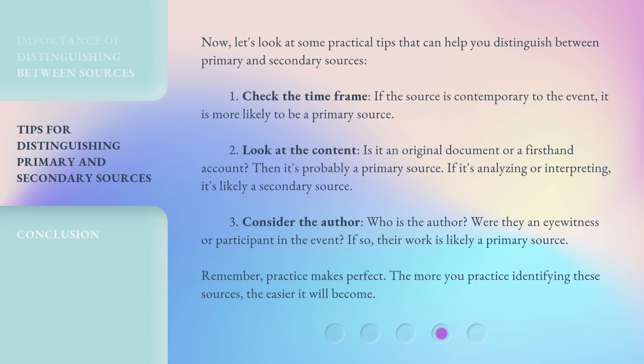Now, let's look at some practical tips that can help you distinguish between primary and secondary sources. 1. Check the time frame. If the source is contemporary to the event, it is more likely to be a primary source. 2. Look at the content. Is it an original document or a first-hand account? Then it's probably a primary source. If it's analyzing or interpreting, it's likely a secondary source. 3. Consider the author. Who is the author? Were they an eyewitness or participant in the event? If so, their work is likely a primary source.